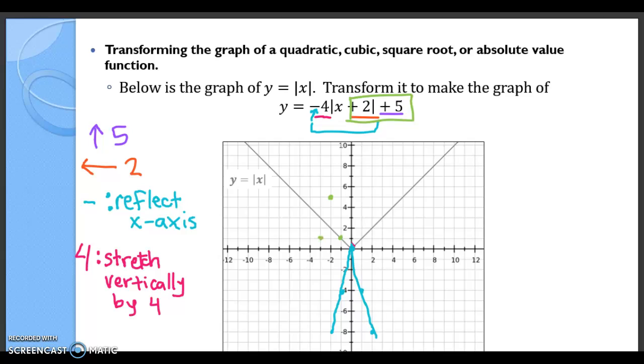Similarly here, and then we're going to go down 4, over 1. So I end up with a function like the green function or the green graph, and not the blue. So let's erase the blue, and my final answer is this green absolute value graph that continues on. That's transforming the graph of a quadratic, cubic, square root, or absolute value function.